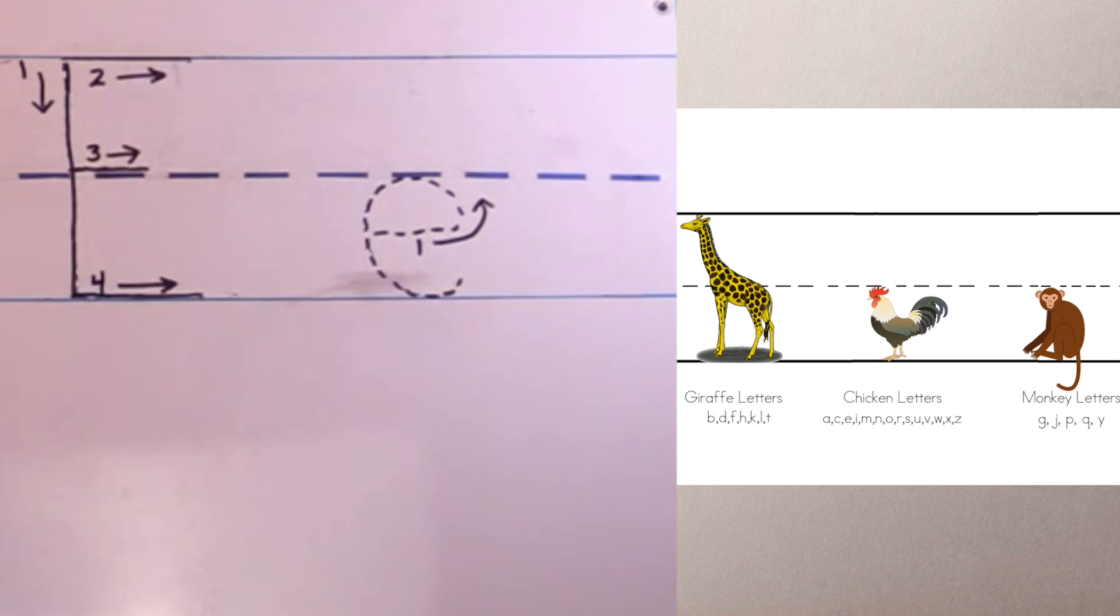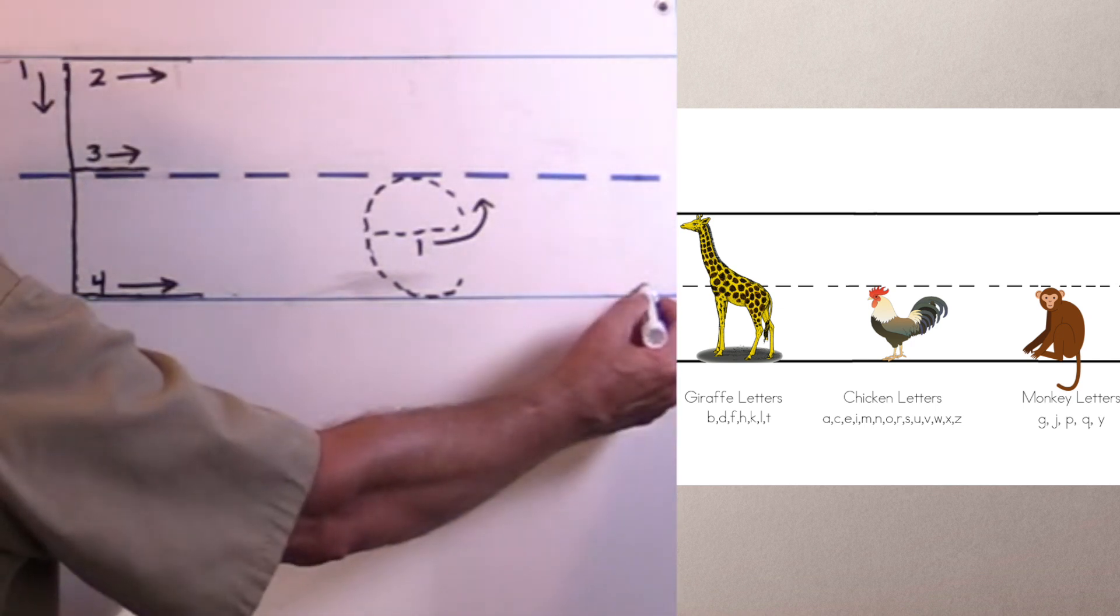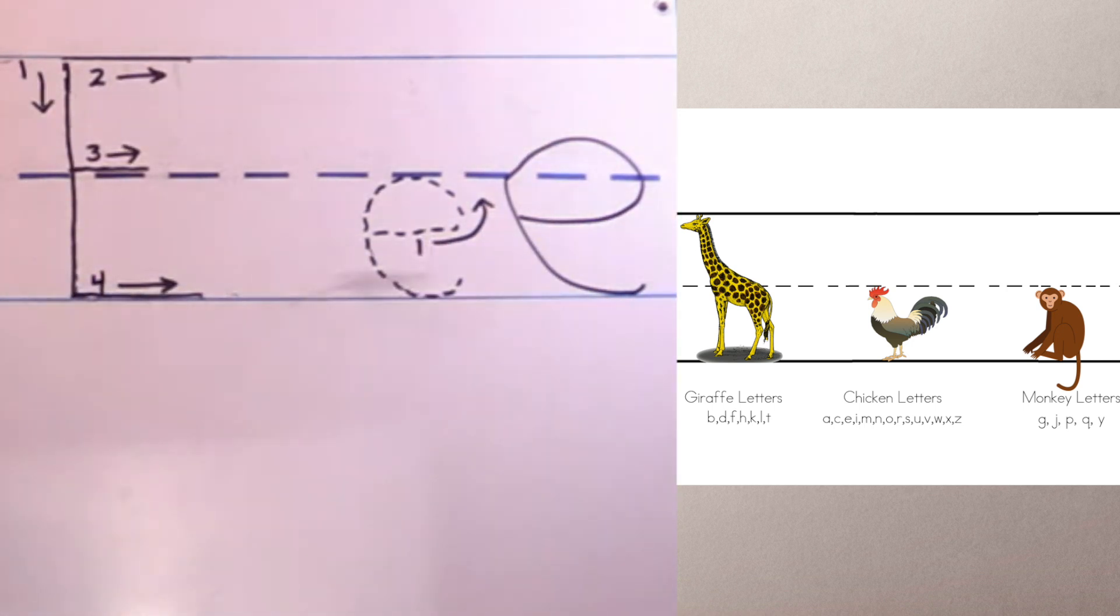Now remember, when we do the lowercase E, we're not going to start at the bottom because if we do, this is what a lot of kids do. They do it from the bottom and it ends up looking like that. Is that very nice? No way!